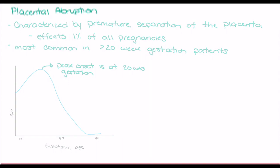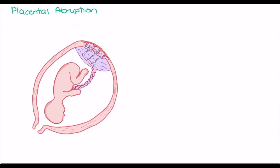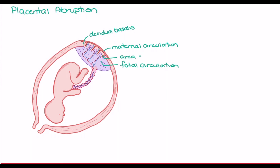In order to understand the pathophysiology behind placental abruption, it's important to review the layers of tissue making up the placenta and the maternal tissues beneath it. When the blastocyst forms, it implants into the endometrium, and the layer below becomes the decidua basalis — the layer in which remodeling of the spiral arteries occurs to form the maternal side of placental circulation. Fetal circulation branches off the umbilical arteries and vein, creating an area of diffusion in which the blood flows do not actually touch.